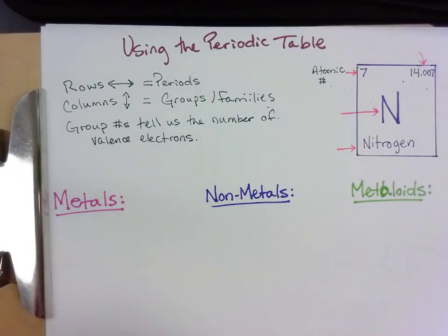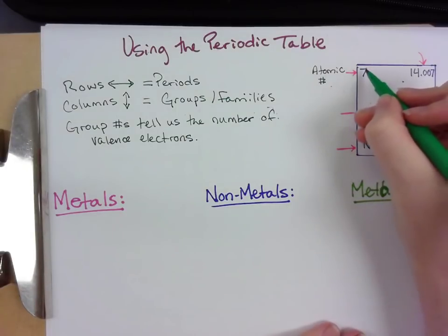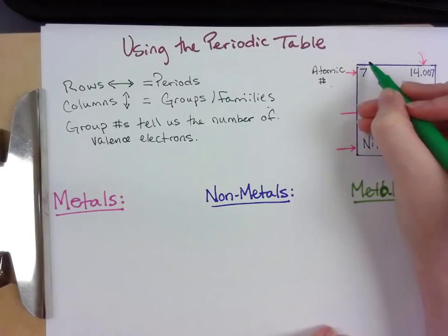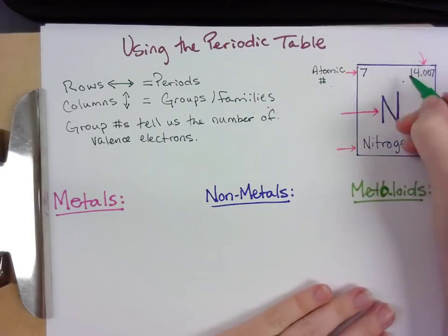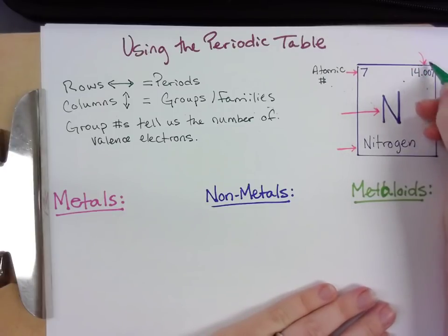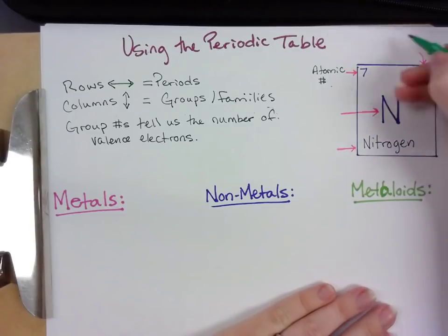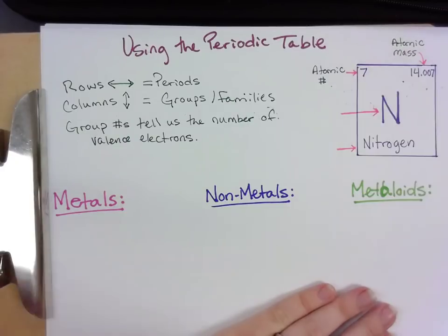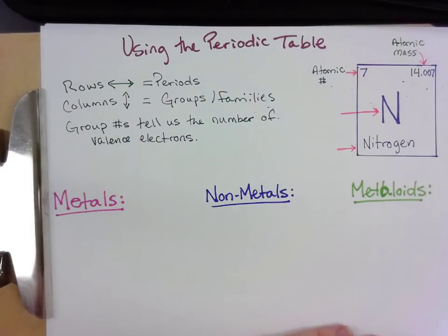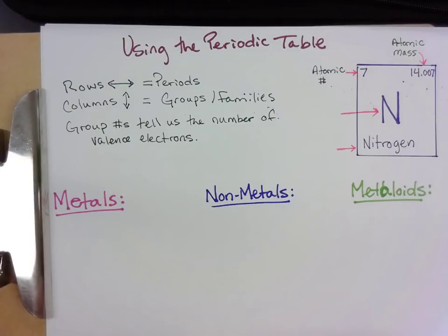The number of protons is in the nucleus, and if you have a neutral atom, it's also the number of electrons you have. So nitrogen's atomic number is seven, so it has seven protons and seven electrons. The number with the decimal is going to be my atomic mass — and atomic mass is the average of all of the isotopes of that atom averaged together. So for nitrogen, 14.007 is the average of all the isotopes of nitrogen.